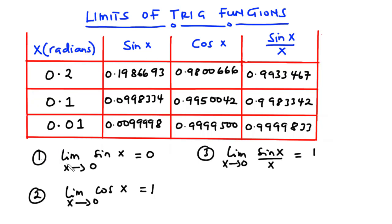Starting with the first equation — the limit of sine x as x approaches 0 is equal to 0. When x is 0.2 radians, sine x is 0.1986693. As x reduces to 0.1, sine x reduces to 0.0998334. And as x further reduces to 0.01, sine x is 0.0099998. So as x gets closer to 0, sine x also gets closer to 0. Hence, this equation is true.